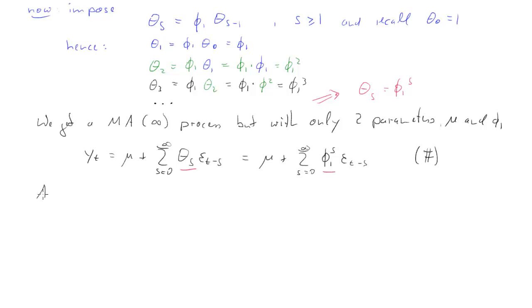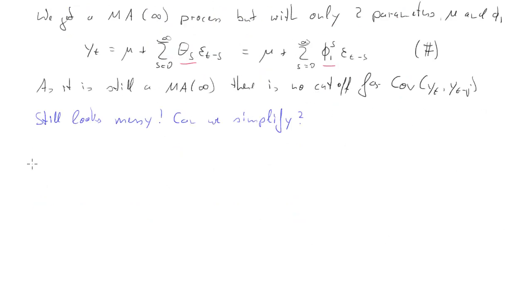Let's call that equation the hash equation. Now, as it is still an MA infinity process, that means that we don't have any cutoff from which onwards the covariance between yt and yt minus j is going to be equal to 0. There will be non-zero covariance. However, this equation still looks pretty messy. Can we simplify it? Fortunately, the answer is yes.